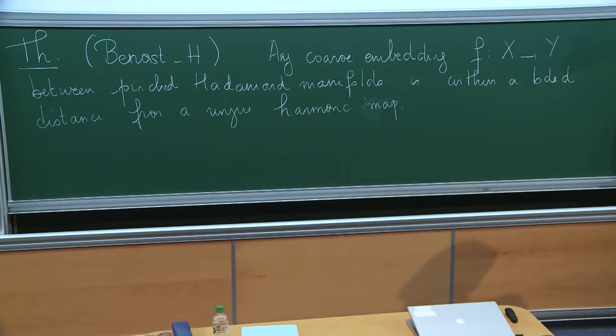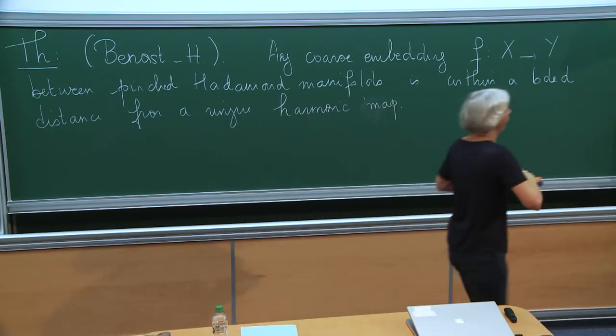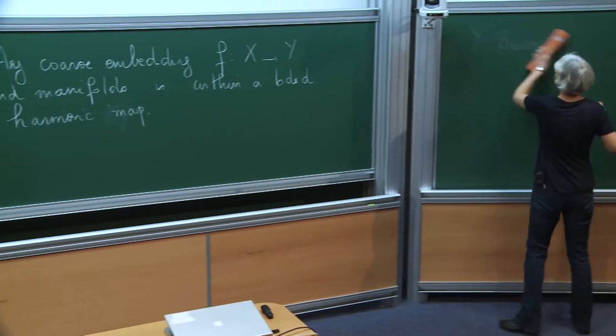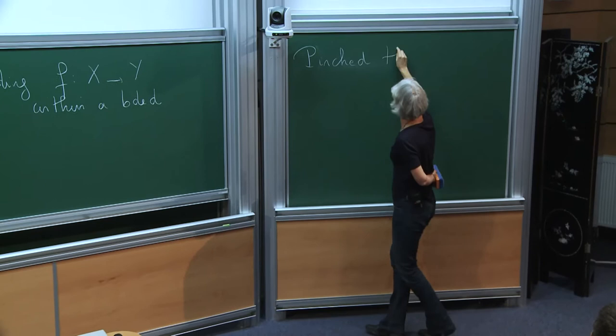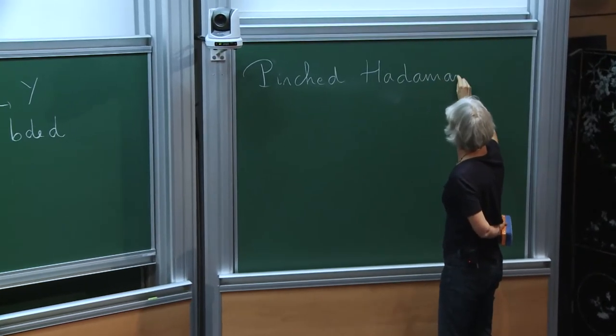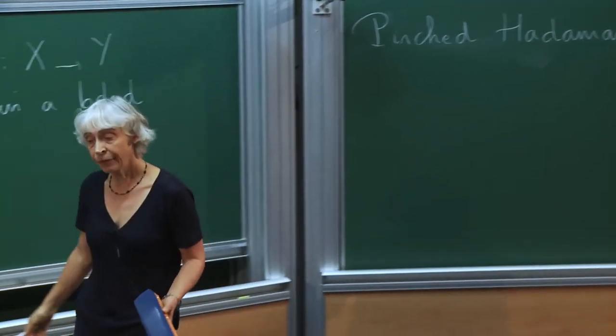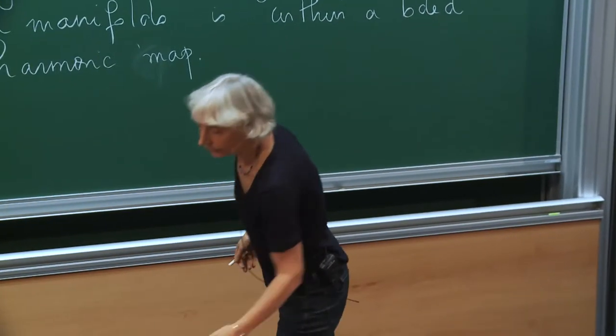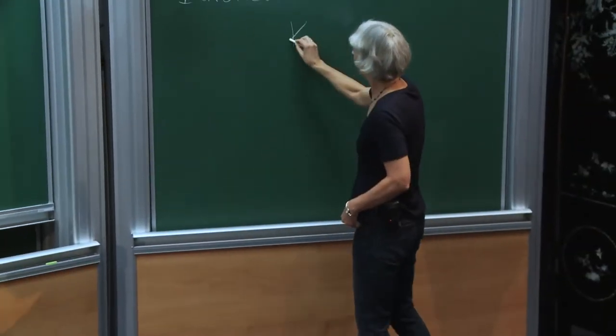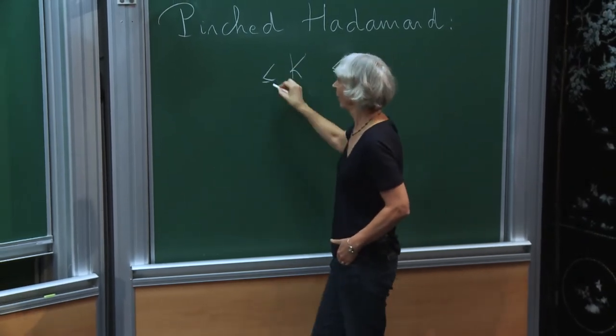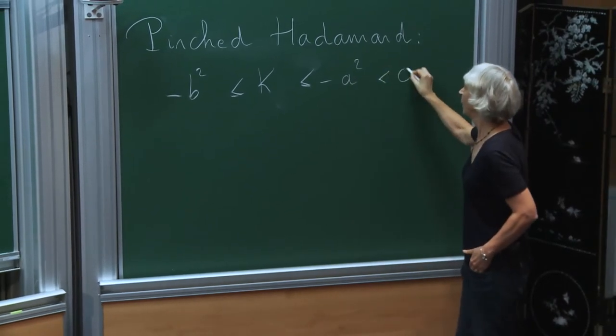So what is a pinched Hadamard manifold? Well, first it is a Hadamard manifold, namely it is a complete simply connected Riemannian manifold. And instead of only requiring that it has non-positive curvature, I will ask that the curvature—namely the sectional curvature—is bounded between two negative constants.